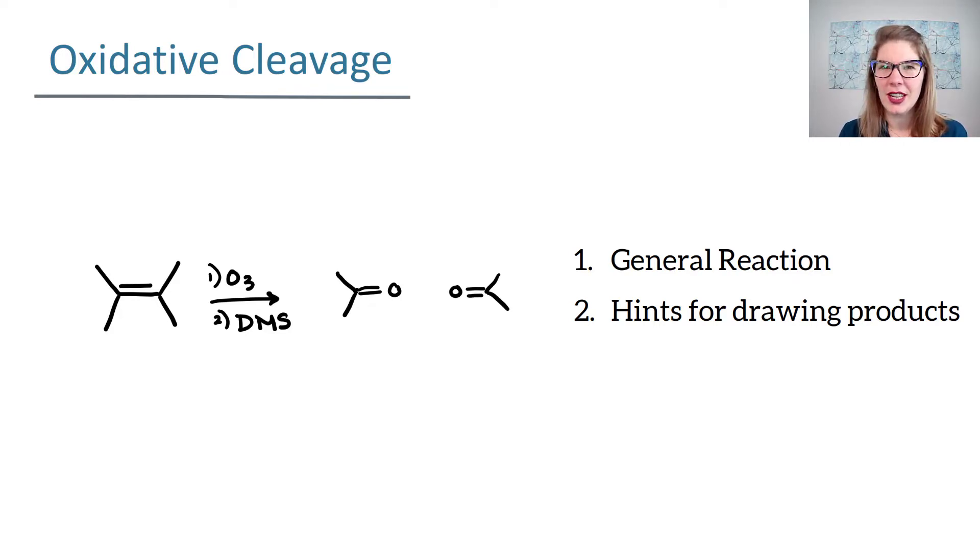When we start with this reaction, we start with an alkene, and that alkene then reacts with ozone, which is O3. The second step can be two different reagents. One of the possibilities is DMS, which is dimethyl sulfide. Overall, what happens is you see a chopping where the alkene is, and you get oxygen on either side. What that means for us is if we start with one alkene, at the end we're often getting two products.